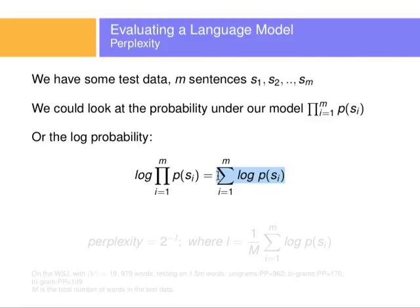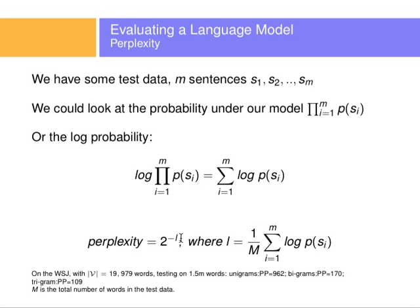So this could be a fine metric to measure the performance of our language model. However, what people use mostly is perplexity, where perplexity is 2 to the negative l, where l is 1 over m times this summation here, this probability.